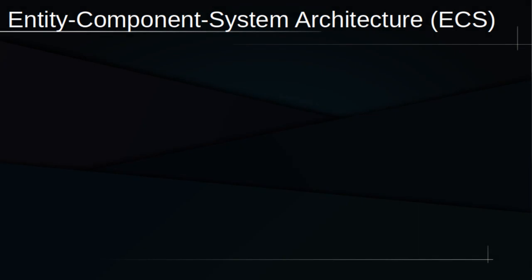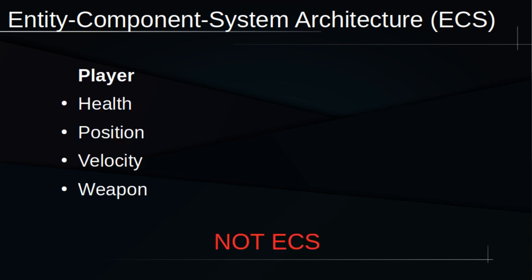Now that we've covered the core libraries, let's discuss one of the most important and complex aspects of the engine: the entity component system architecture, which I'll just refer to as ECS for short. An ECS is essentially a very clean and modular way of organizing all the pieces that comprise a video game. Let me provide a tangible example. Suppose I'm making a game and want to instantiate a player that has health, can move around, and is able to attack. To represent those features, I might give the player a health bar, a position, a velocity, and a weapon.